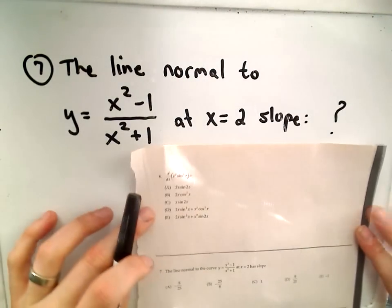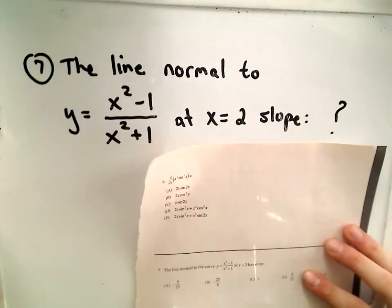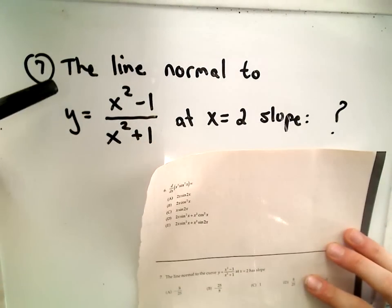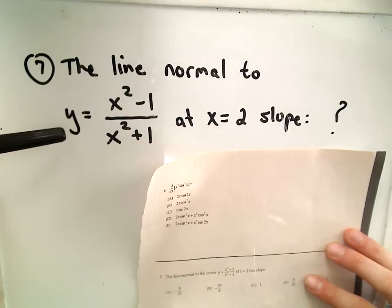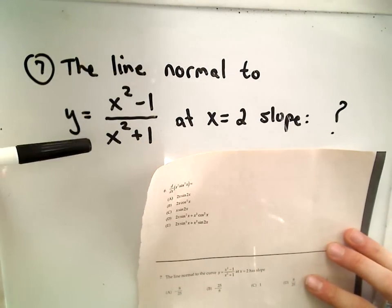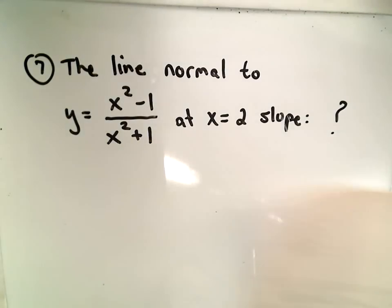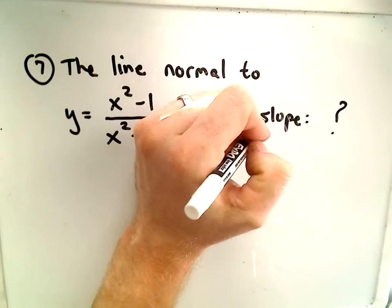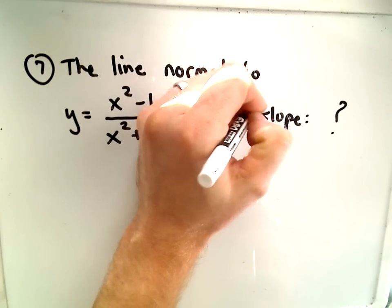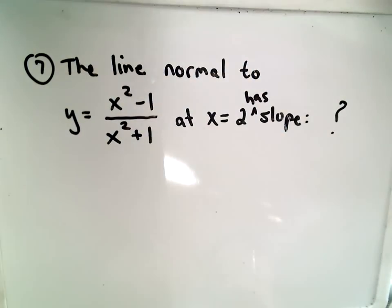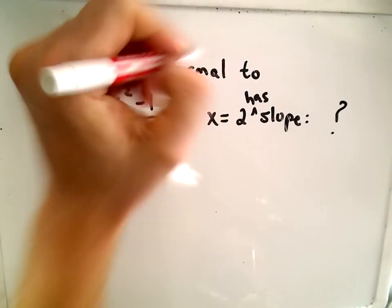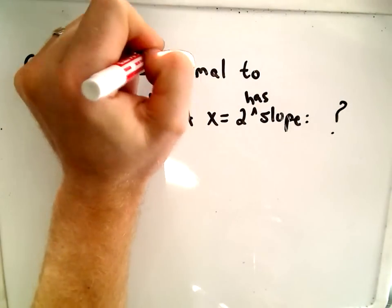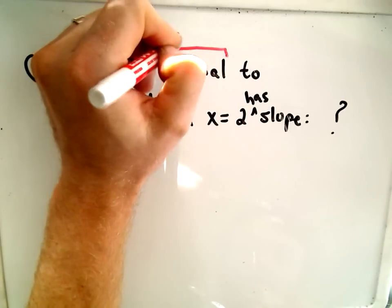Question number 7 says the line normal to this curve, y equals x squared minus 1 over x squared plus 1 at x equals 2, has a slope of what? Remember that normal is just a fancy word for perpendicular.